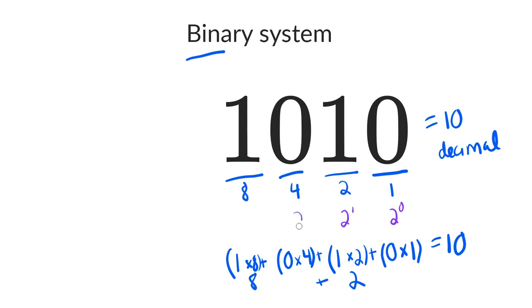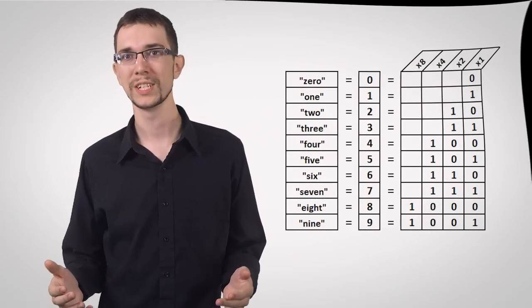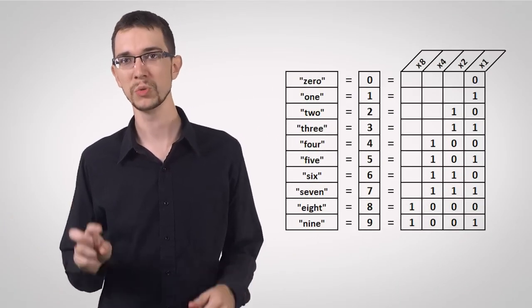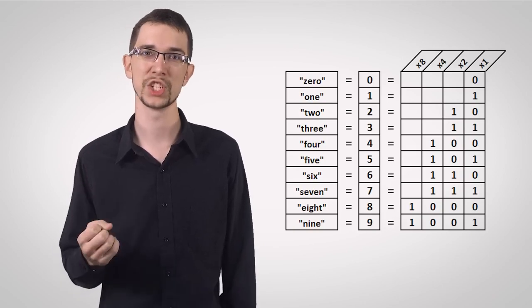The third bit is 2 squared, 2 to the power of 2, which is 4. And this fourth bit is 2 cubed, 2 to the power of 3, that's 8. With just two symbols, each new digit needs to have a value 2 times greater than the digit to its right.